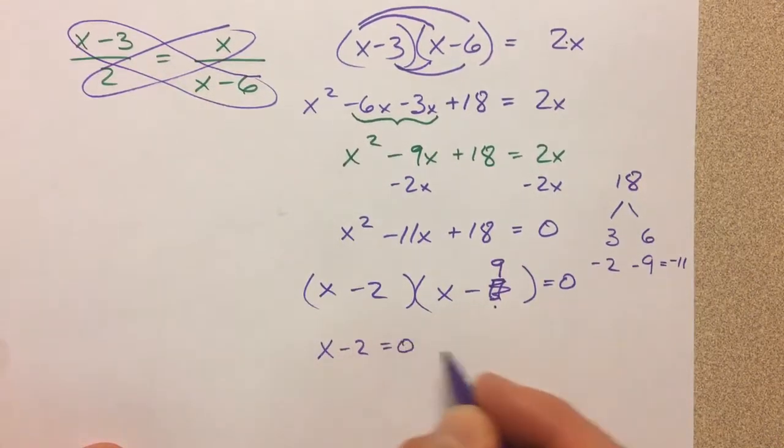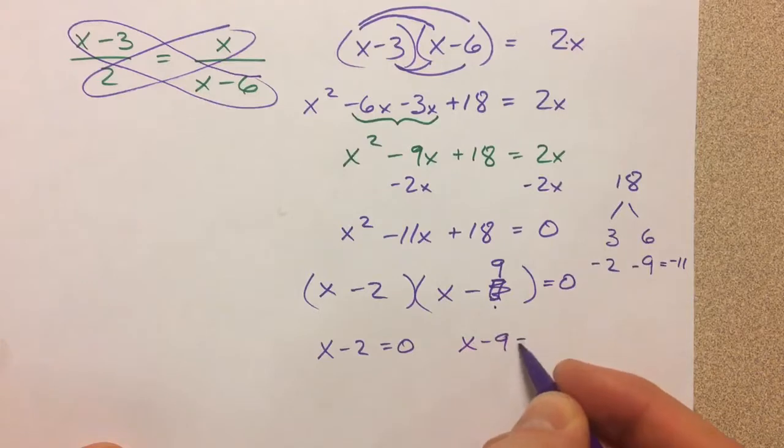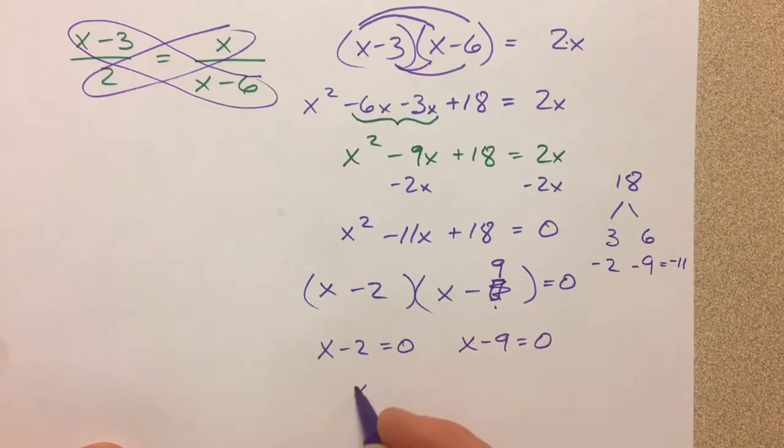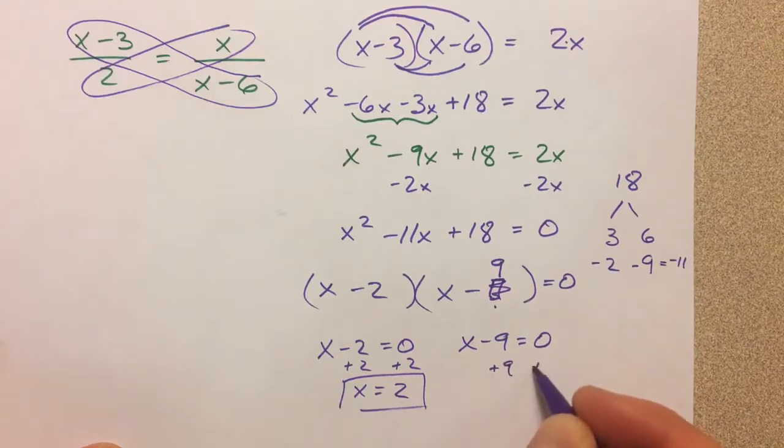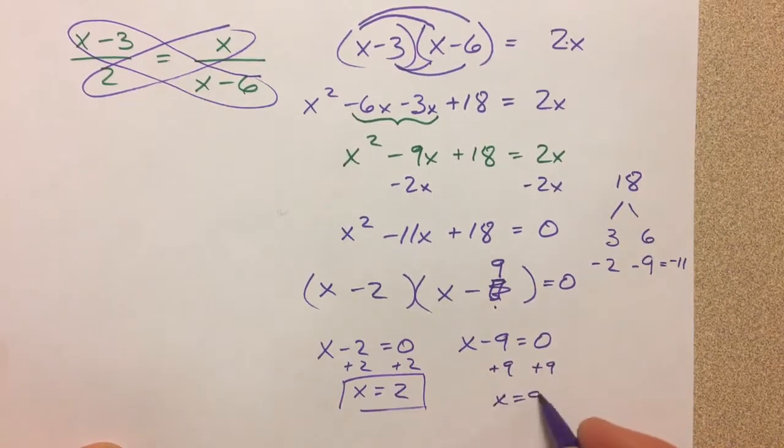x minus 2 is 0. x minus 9 is 0. So add your 2 over, and x equals 2. Add your 9 over, and x equals 9.